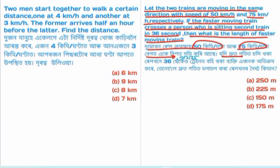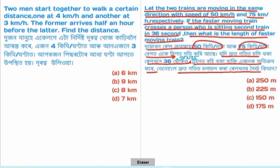Let the faster moving train cover the distance in 36 seconds. The relative speed of the two trains moving in the same direction is 75 minus 50 equals 25 km per hour. We convert this to meters per second and multiply by 36 seconds to find the length of the train.